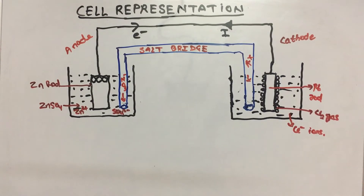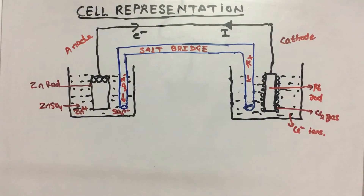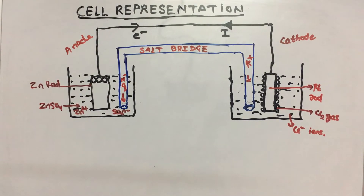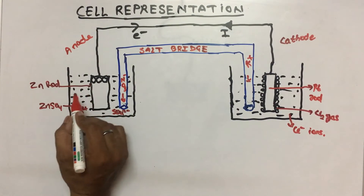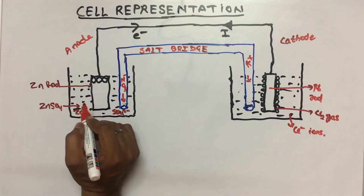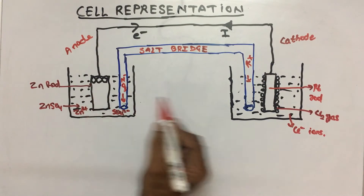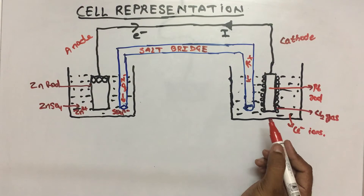Now, anode. As we know, the element which has higher standard reduction potential will reduce, and the element with lower standard reduction potential will be oxidized. Zinc's reduction potential is minus 0.76 volt and chlorine gas reduction potential is 1.36 volt. Since chlorine has higher reduction potential, zinc will be oxidized.